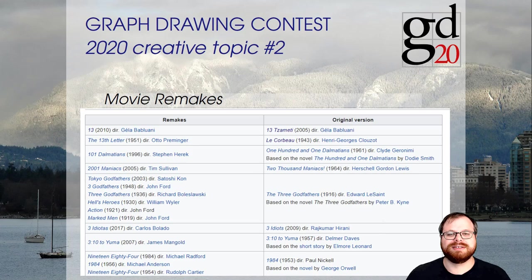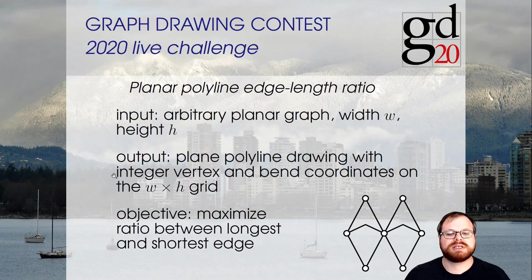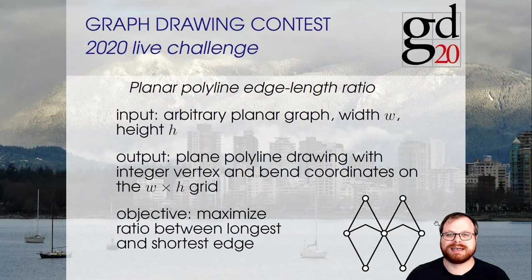The new live challenge for the next two years will be about planar polyline edge length ratio. As input you receive an arbitrary planar graph with a planar embedding and the width and height of a grid. The output is a planar polyline drawing where vertices and bends are on the W×H grid, and the ratio between the longest and shortest edge is minimized. For example, a drawing where all edges have the same length achieves a ratio of 1. Thank you for watching and have fun with the new topics. I hope to get many submissions and see you again next year.